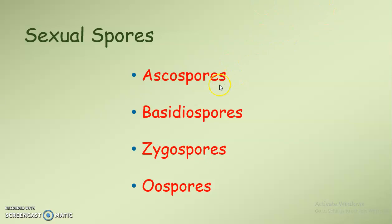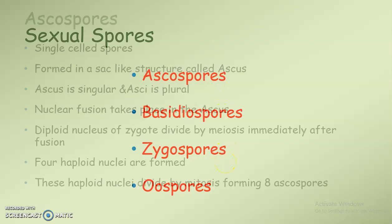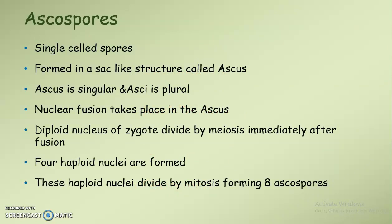The main types of sexual spores are ascospores, basidiospores, zygospores, and oospores. Ascospores are single-celled spores formed in sac-like structures called ascus, and asci is the plural. Inside the ascus, nuclear fusion occurs — the nuclei of the two parent cells fuse to form a diploid zygote.